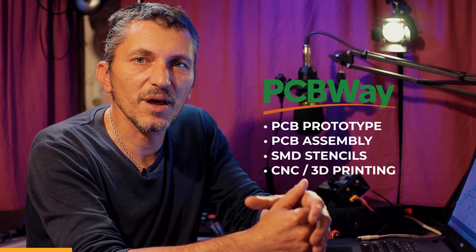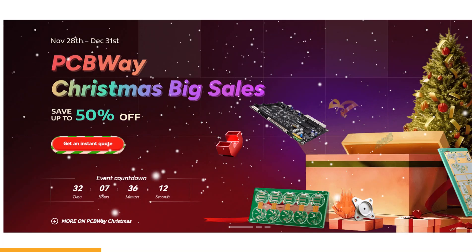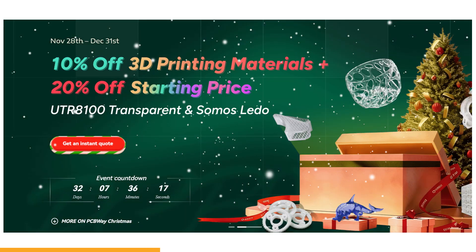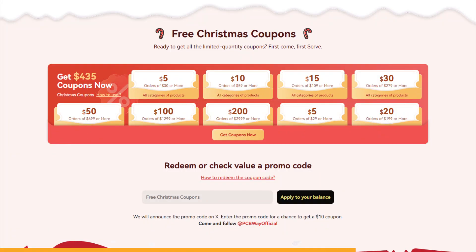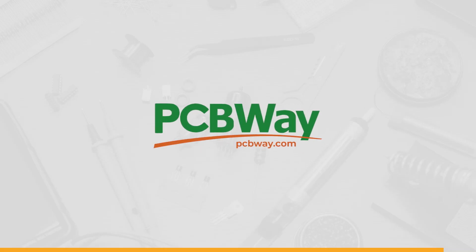And talking about PCBWay they have great PCB prototyping services, PCB assembly, SMD stencils, CNC, 3D printing and a lot more available for you. And now is the moment to take advantage of the big Christmas sales. You can save up to 50% off on your orders. You get 10% off on 3D printing materials. You get 20% off starting price for the UTR 8100 transparent and Somos Lido. You also have free upgrades. You get purple black matte and pink solder mask. And you have a bunch of free Christmas coupons. So take advantage of this big Christmas event. I think now is the time to make your orders with PCBWay. So as I'm always saying, PCBWay is the way.